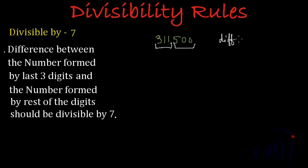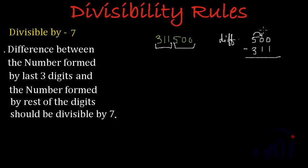We have to find the difference by subtracting the smaller number from the larger number. The larger number is 500, and we subtract 311 from it. Since 1 is bigger than 0, we need to borrow — but the tens digit is also 0, so we borrow from the hundreds place, making it 10 tens, then borrow 1 from tens to get 10 ones. So: 10 minus 1 is 9, 9 minus 1 is 8, 4 minus 3 is 1. We get 189 as the difference.